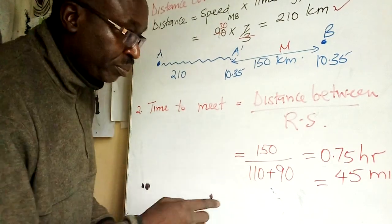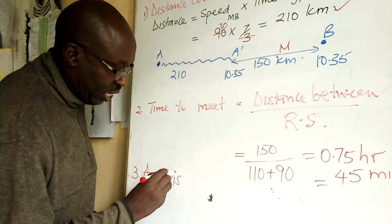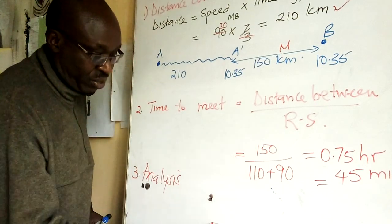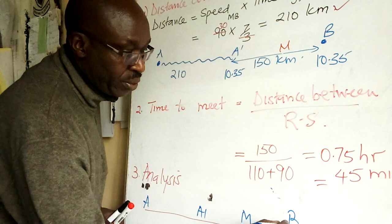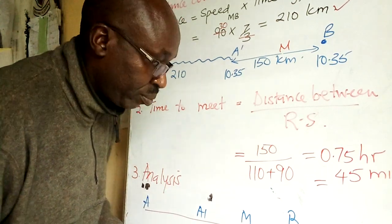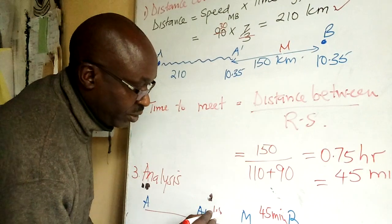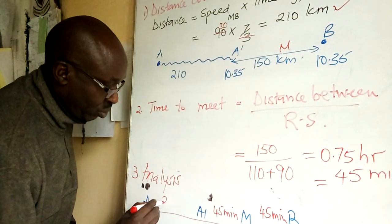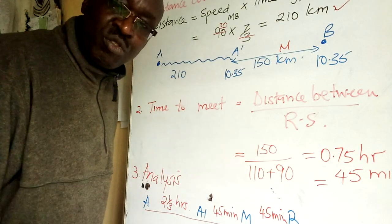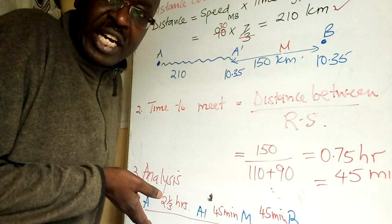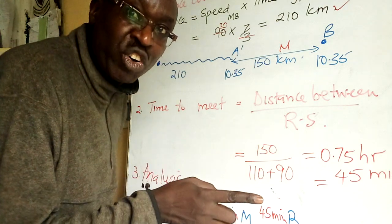As I concluded, after you have done number two you come and do number three: analysis. This analysis helps you. There is A, there is A prime, meeting point, and B. Now I'm analyzing it with respect to time. So this is 45 minutes here, 45 minutes, but here is two and a third hours. Any question to do with distance: distance is speed times time.